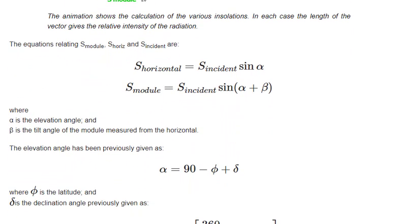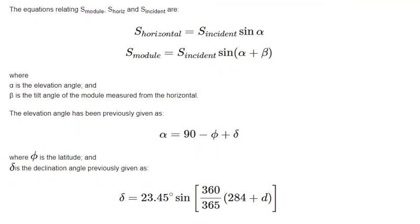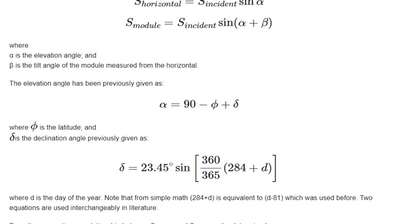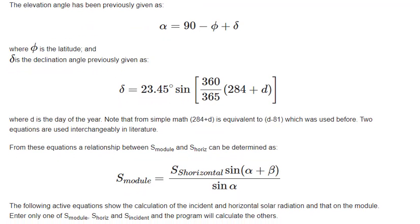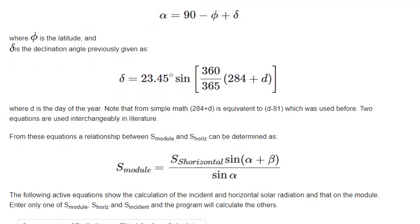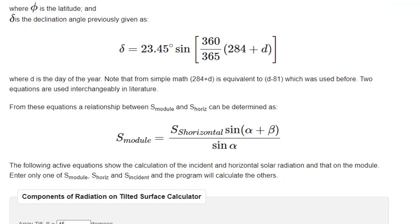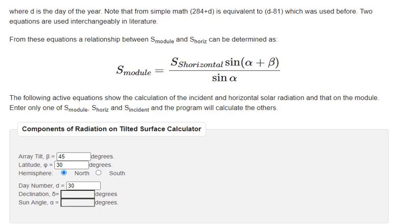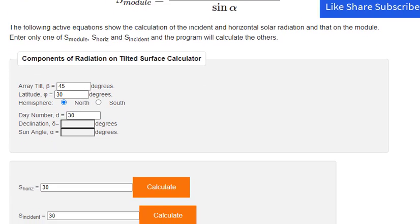The elevation angle has been previously given as a formula where D is the day of the year. Note that from simple math, 284 plus D is equivalent to D minus 81, which was used before. Two equations are used interchangeably in the literature. From these equations, a relationship between S_module and S_horiz can be determined.